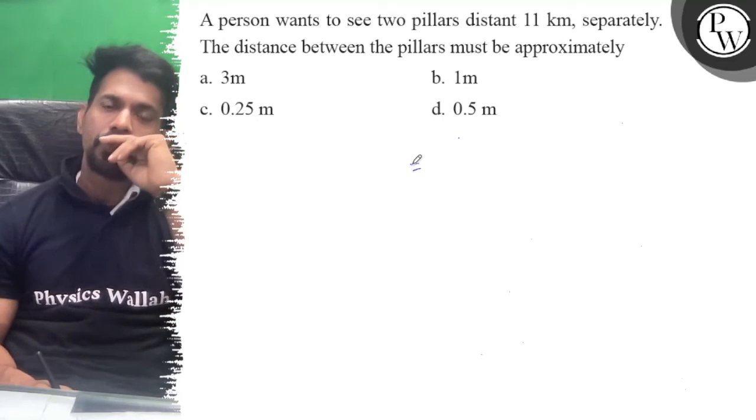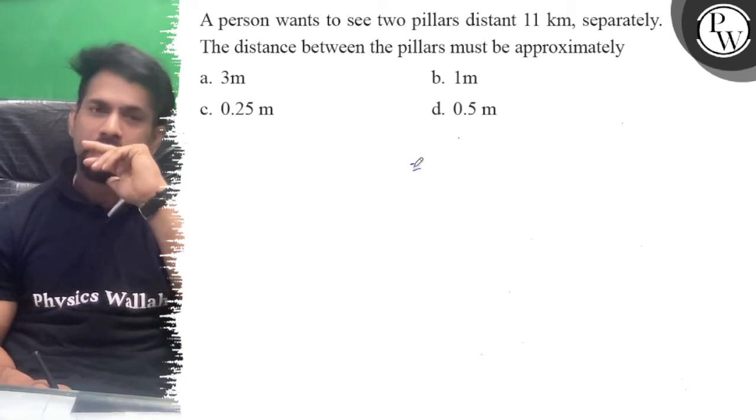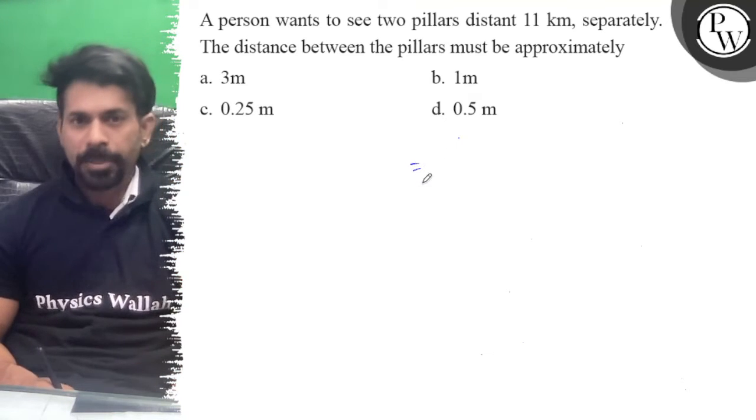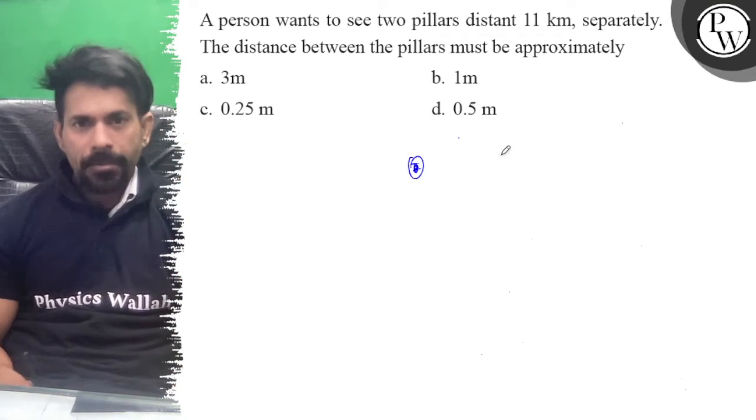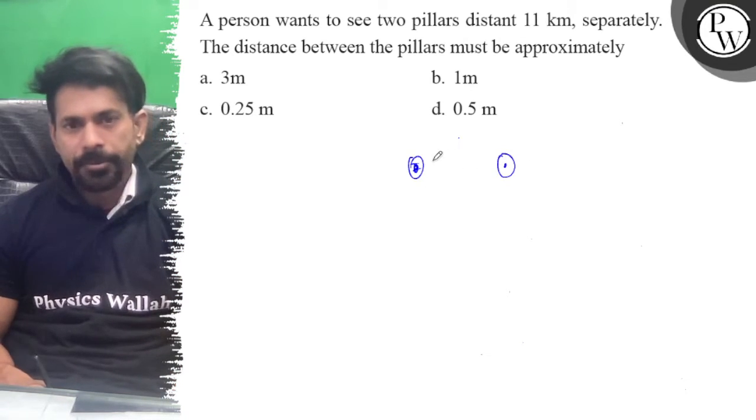Hello, let's see if a person wants to see two pillars distant 11 kilometers separately, the distance between the pillars must be... So let's see, we have the two pillars like this and the distance between them is x.